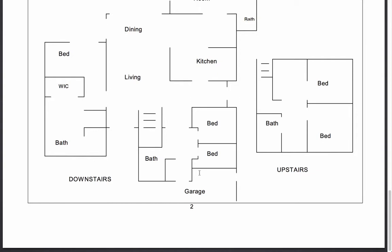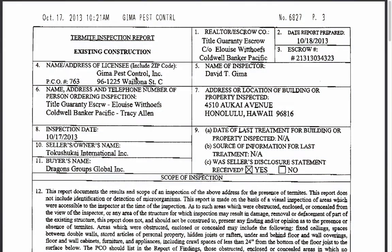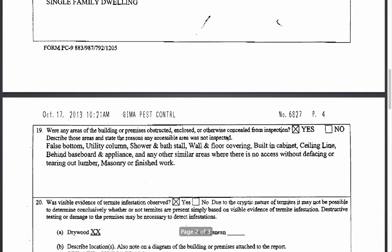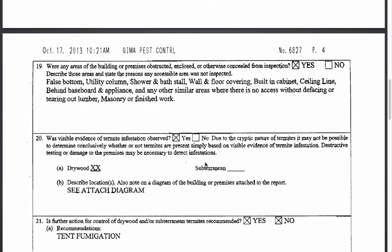Now I want to show you what it looks like when there are live termites and termite damage. Here's a termite inspection report done by a different company — it looks very similar in format, with the property information, escrow details, all parties involved, buyer and seller information, and whether the seller disclosure statement was received. Scrolling down, we see the general description of the property and whether any areas of the building were obstructed — in this case, yes, there were inaccessible areas. And in this case, there was evidence of visible termite infestation, so the inspector checked yes for dry wood termites.